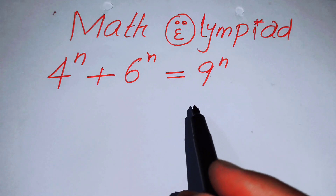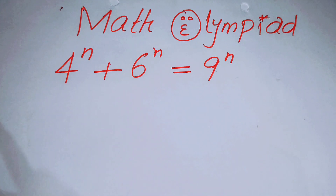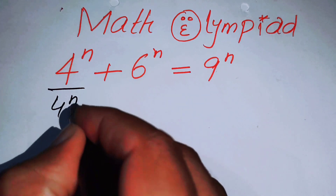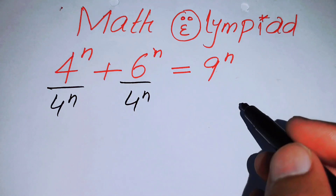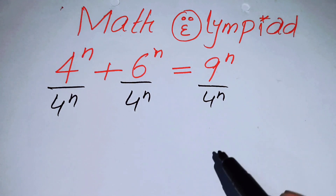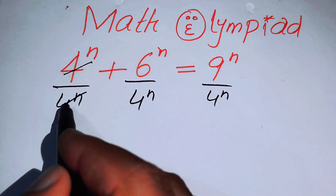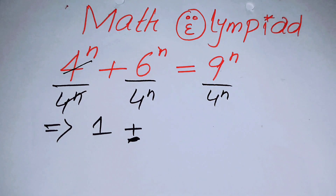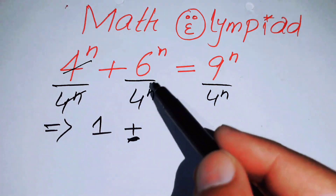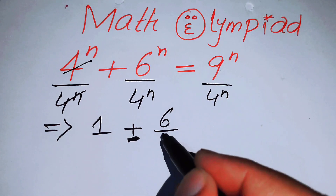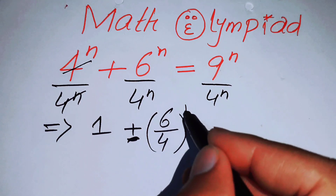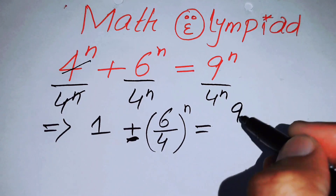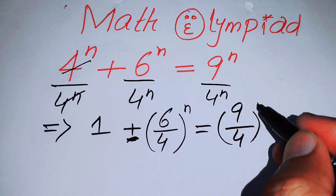The first thing we are going to do is rewrite this equation, then divide each side by 4 to the power of n. When you divide each side by 4 to the power of n, those two terms simplify, and you get 1 plus 6 over 4 to the power of n equals 9 over 4 to the power of n, combining the exponents of each pair of terms.